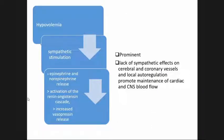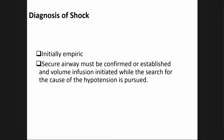Hypovolemia also includes sympathetic stimulation leading to epinephrine and norepinephrine release, activation of the RAAS cascade, and increased vasopressin release. Peripheral vasoconstriction is prominent, while lack of sympathetic effects on cerebral and coronary vessels and local autoregulation promote maintenance of cardiac and CNS blood flow. For the diagnosis of shock, this is initially addressed with empiric treatment — securing the airway and establishing volume infusion while the search for the cause of hypotension is pursued. In a trauma or post-operative patient, shock should be presumed due to hemorrhage until proven otherwise.